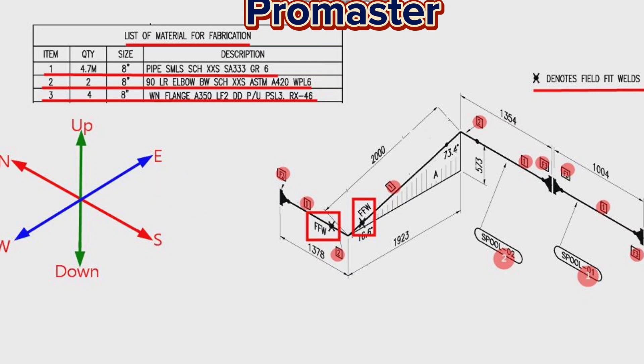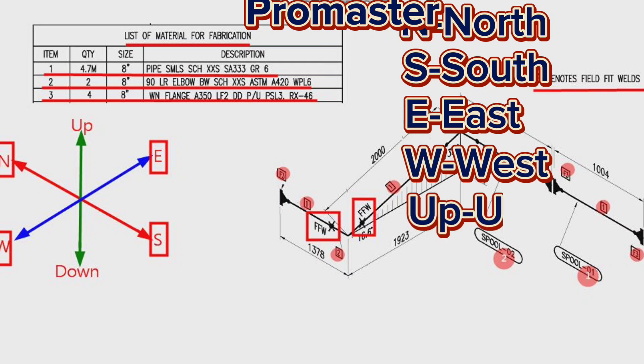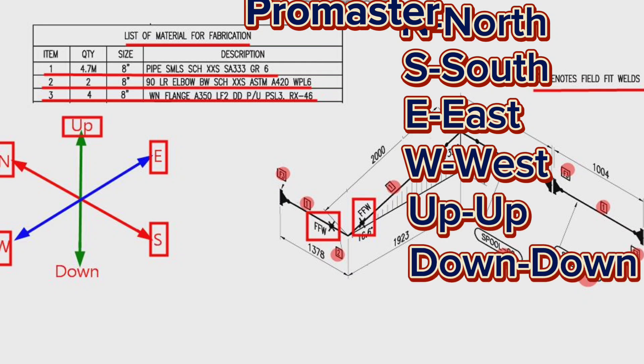There are six directions here. N stands for north, S stands for south, E stands for east, W stands for west, Up stands for up, Down stands for down directions.